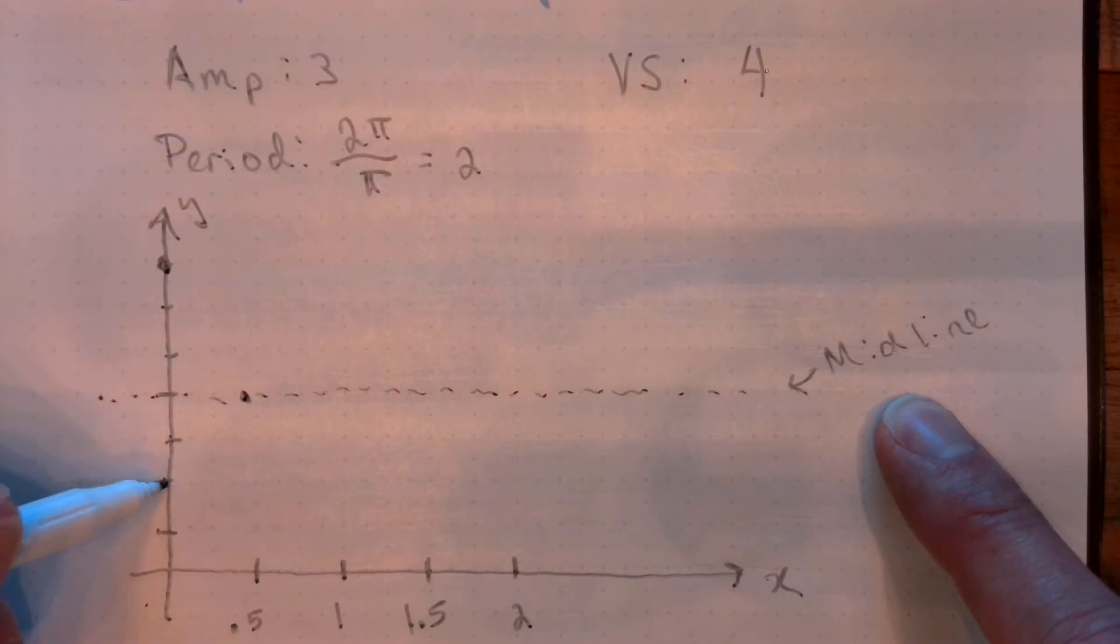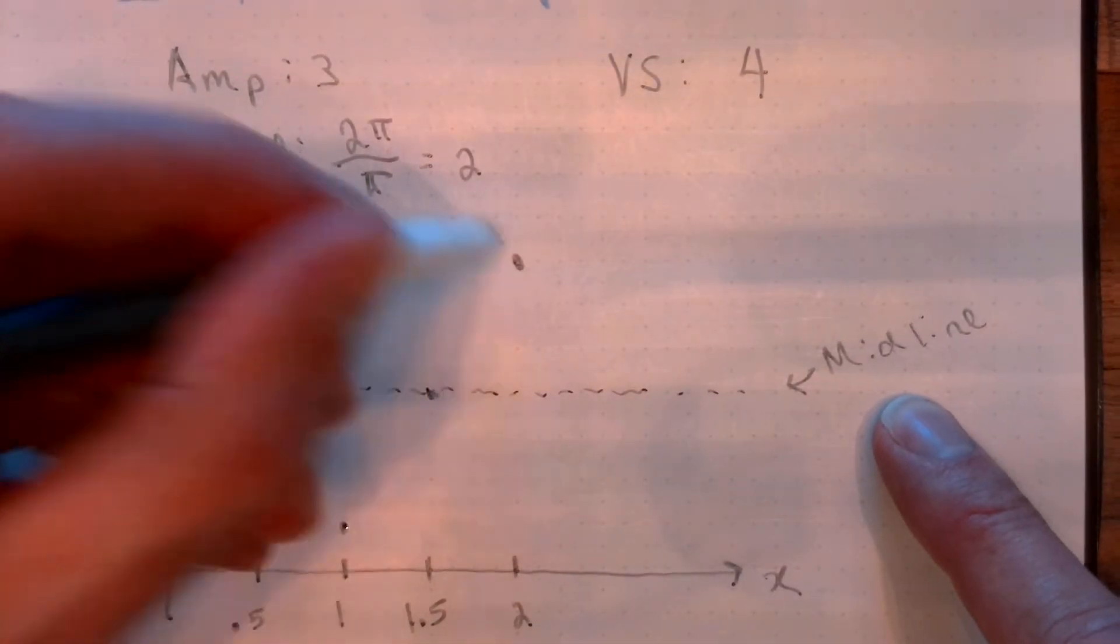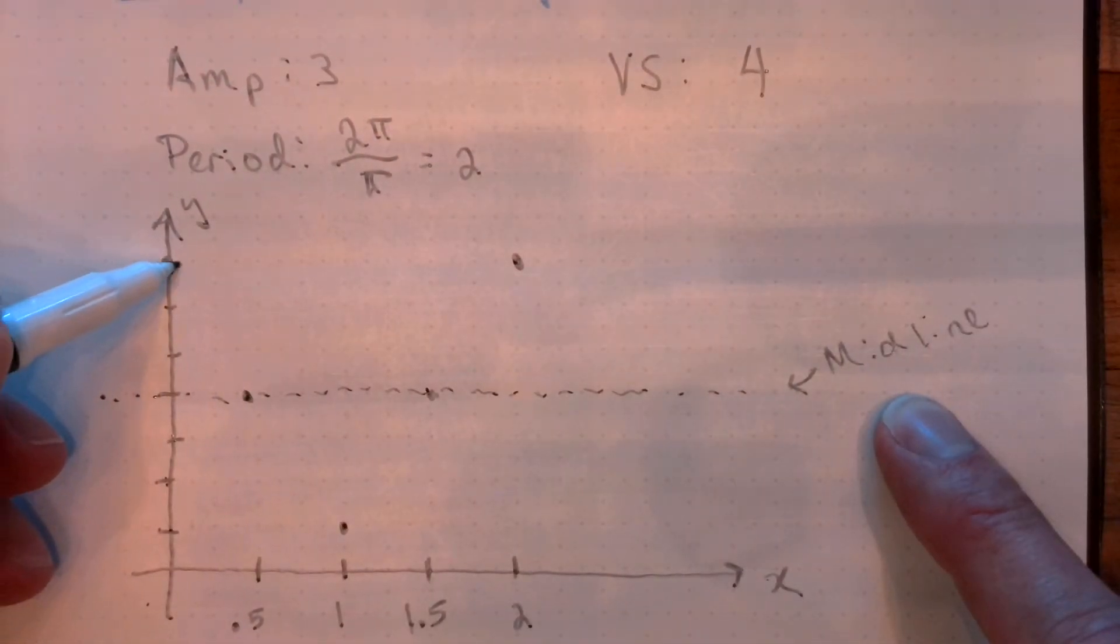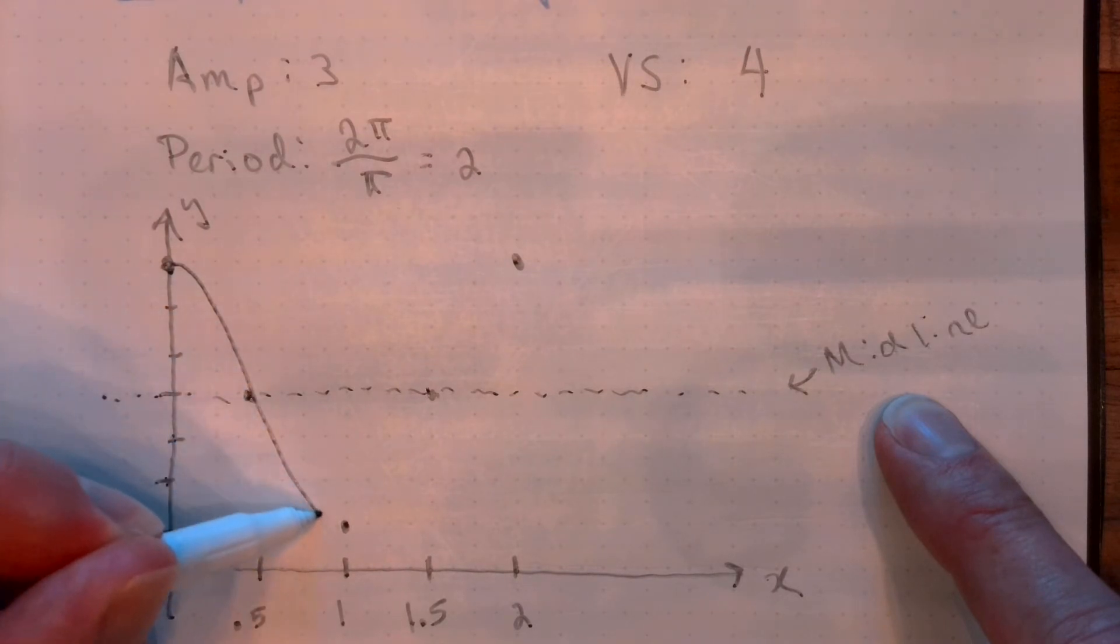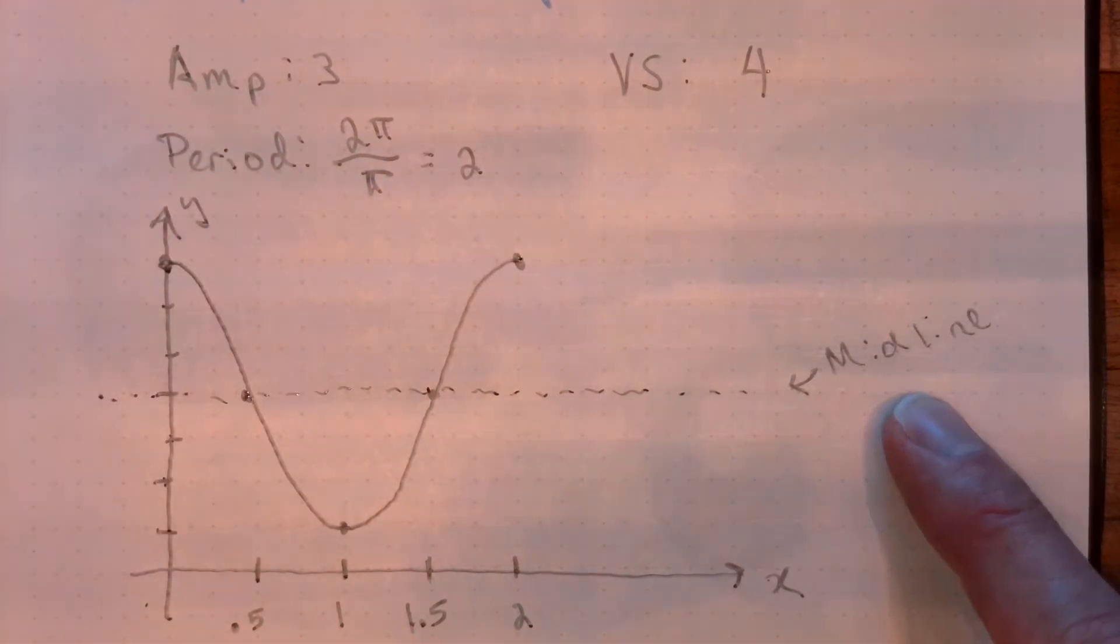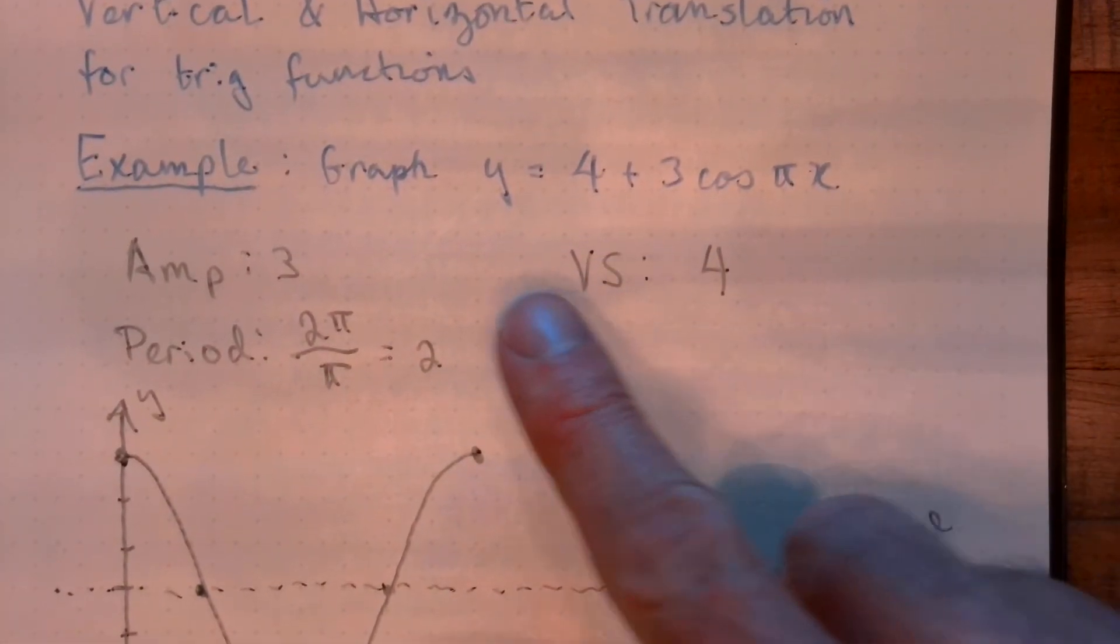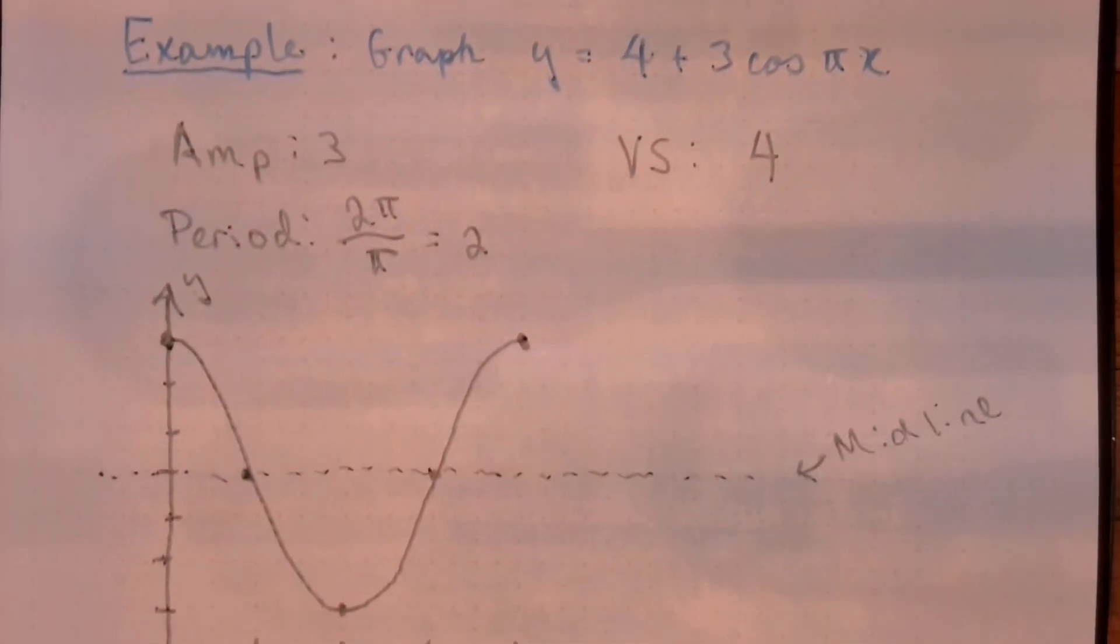Hit the midline, we're going to bottom out 1, 2, 3 units below the midline. Back to the midline. And then up to the top right here. We, once again, connect everything with our nice smooth curve. And this is a graph of one complete cycle of y equals 4 plus 3 cosine pi x.